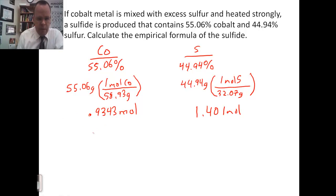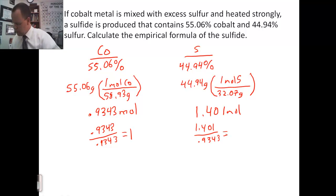Now, I want to take and divide each by the smallest one. 0.9343 divided by 0.9343, which will come out to 1. 1.401 divided by 0.9343. When I do that, I get 1.5.